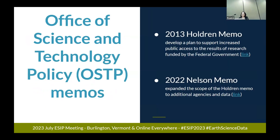What affects science data specifically? That's where we get to two OSTP memos. The first came out in 2013, nicknamed the Holdren memo, which developed a plan to support increased public access to the results of federally funded research. More recently in 2022, the scope was expanded with the Nelson memo to add additional agencies and data.